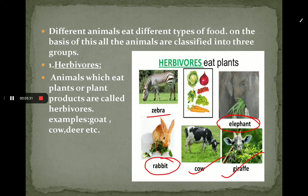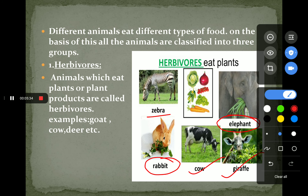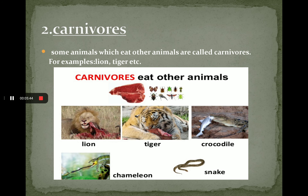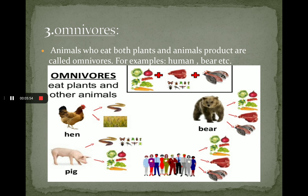All herbivores eat only plants or plant products. Now, the next category is carnivores. Carnivores are those animals which eat other animals. Here, lion, tiger, crocodile, chameleon and snake are some examples of carnivores.